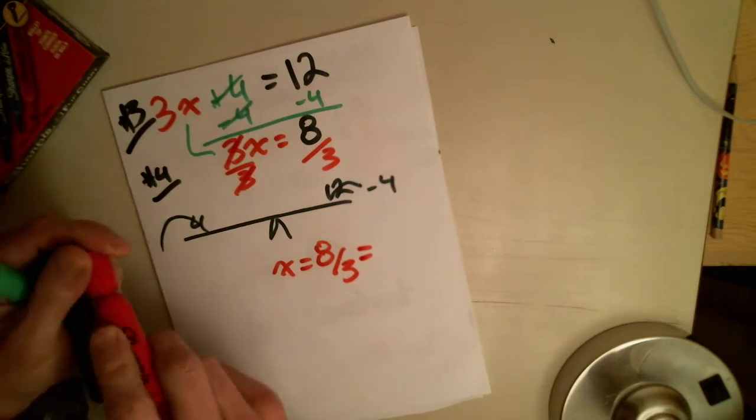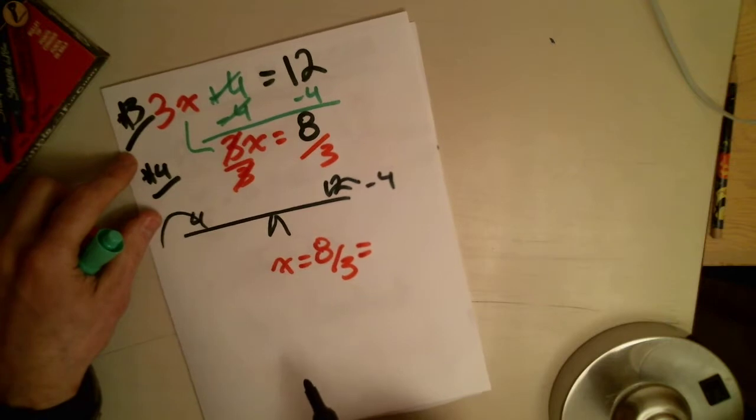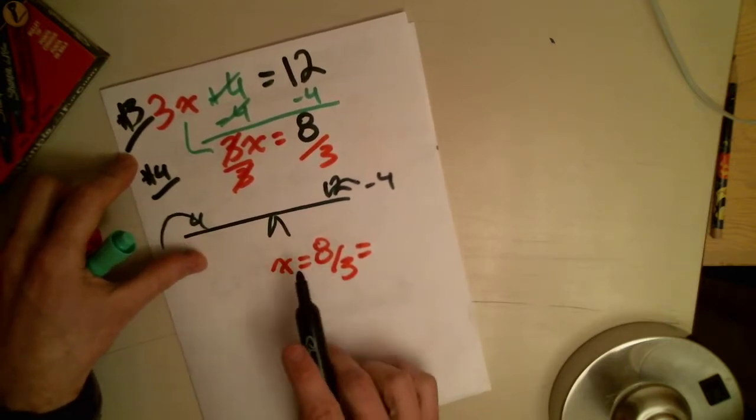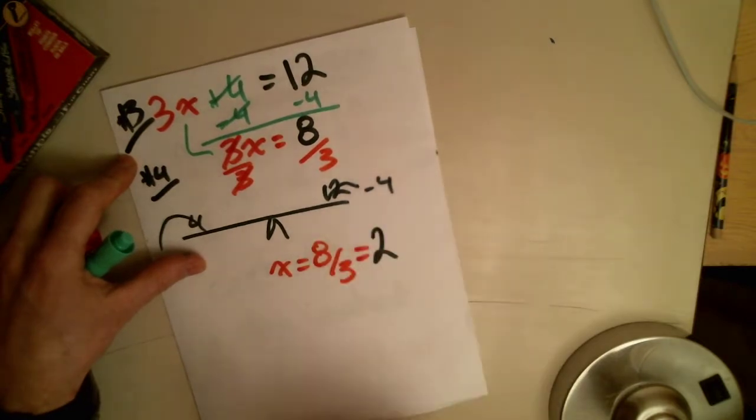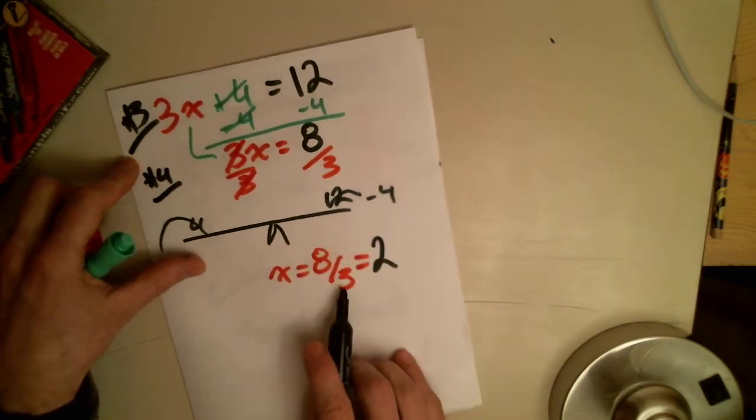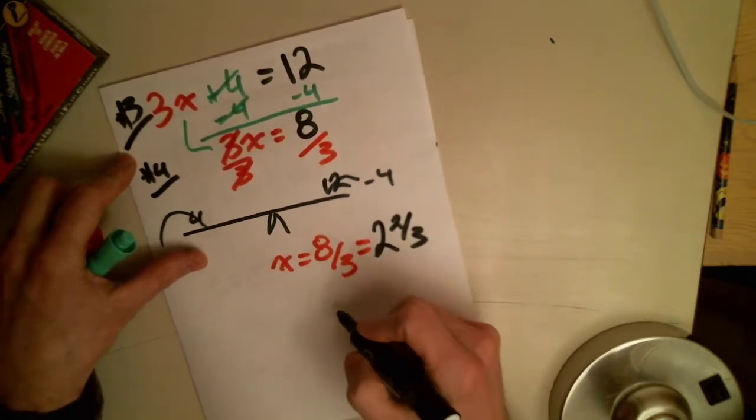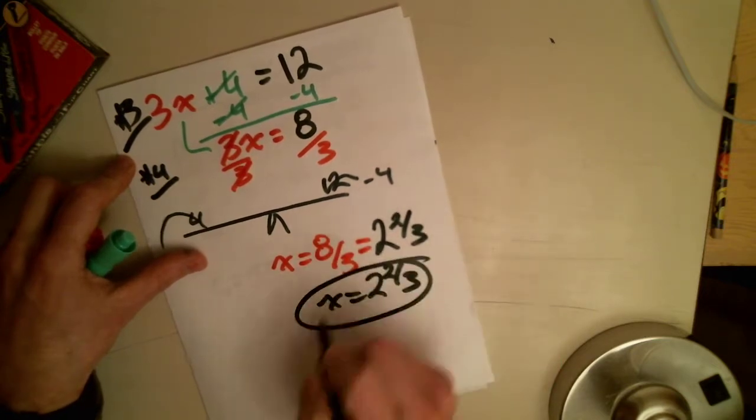So x equals 8 divided by 3. Now, this is where math gets interesting. Can't leave it like that because this is an improper fraction. That was our last unit. So how many 3's go into 8? Well, 2 3's is 6. So I can take at least 2 out. 2 times 3 is 6. I've got 2 left over. So that's 2 and 2 thirds. That's my answer. x equals 2 and 2 thirds. Right there.